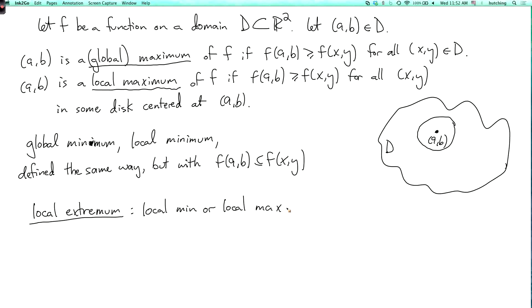And another piece of terminology we should use is a critical point. So (a,b) is a critical point of f if the partial derivatives fx(a,b) and fy(a,b) are both defined and equal to zero.